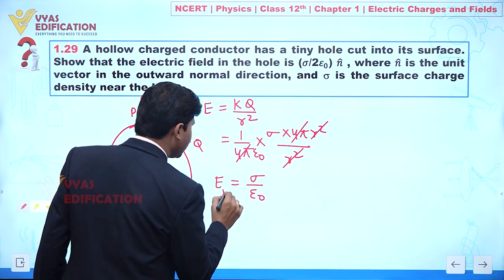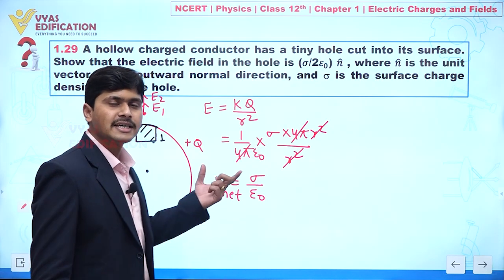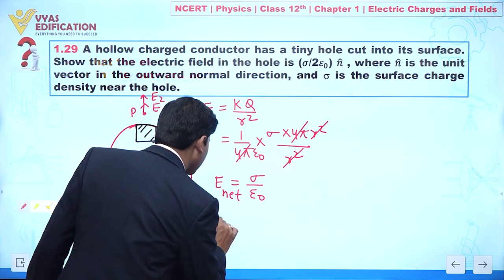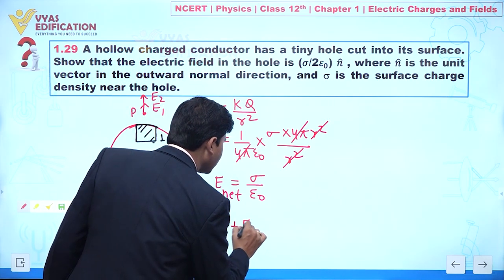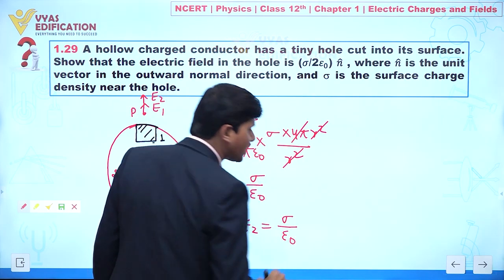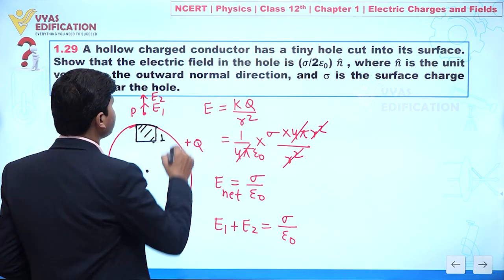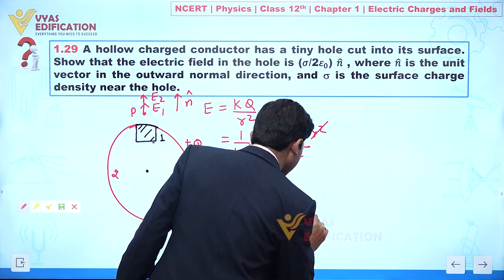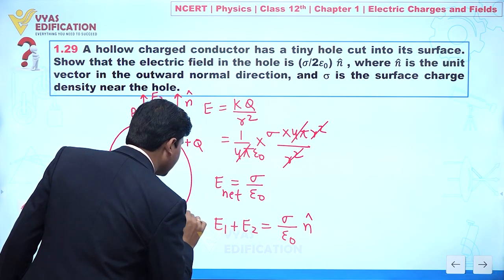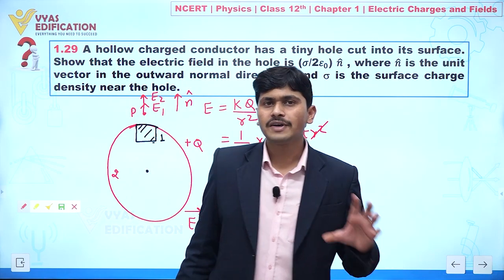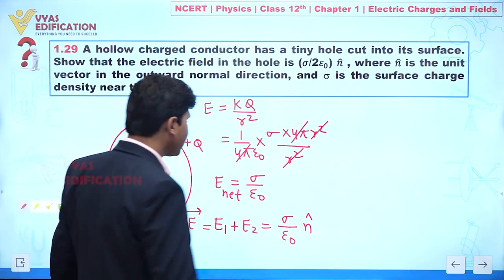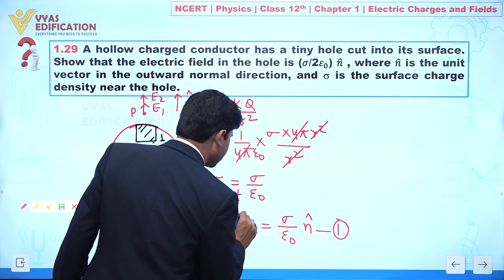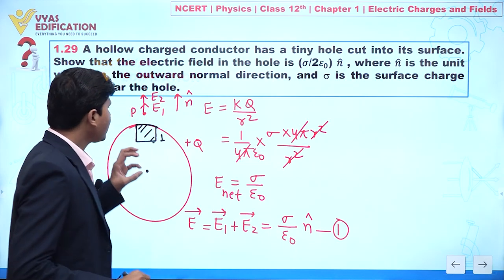This E_net consists of two electric fields E1 and E2, both in the same direction. So we can write E1 + E2 = σ/ε₀. Including the unit vector n̂ in the outward direction, the net electric field is (σ/ε₀) n̂. Let's call this Equation 1.